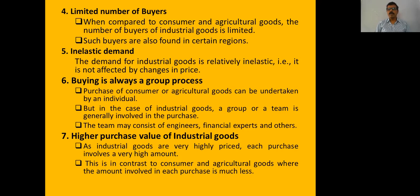Industrial goods have a higher purchase value. For example, buying a papad costs around 10 to 15 rupees, but buying a papad-making machine requires 10 to 15 lakhs. So a huge amount of value is involved in industrial goods.